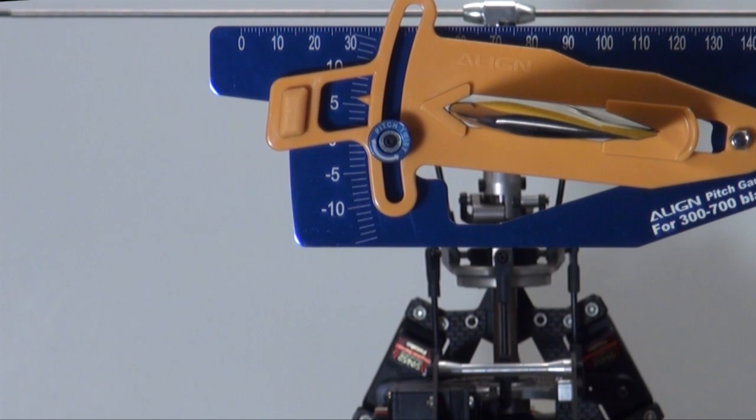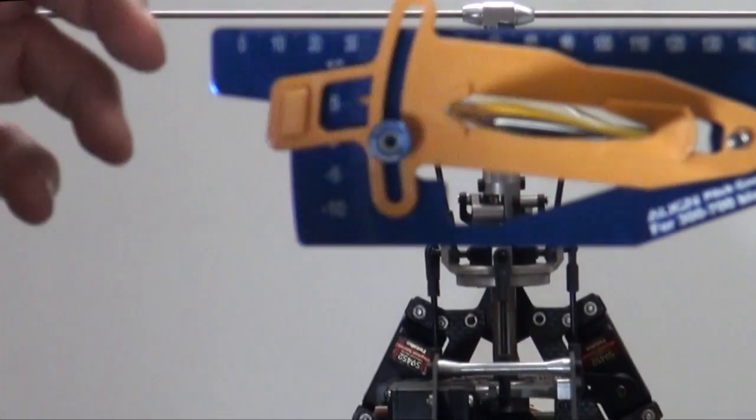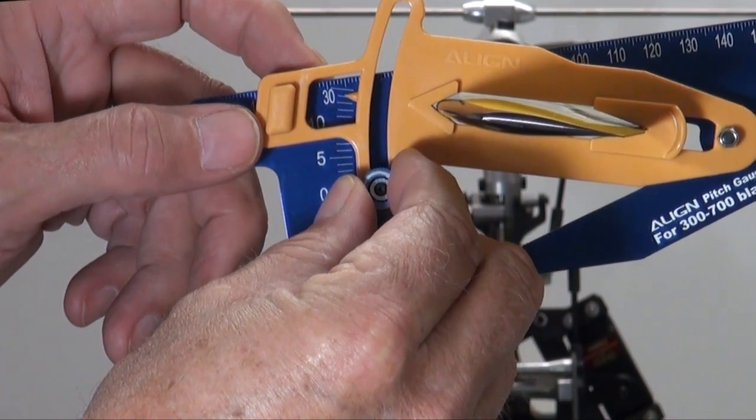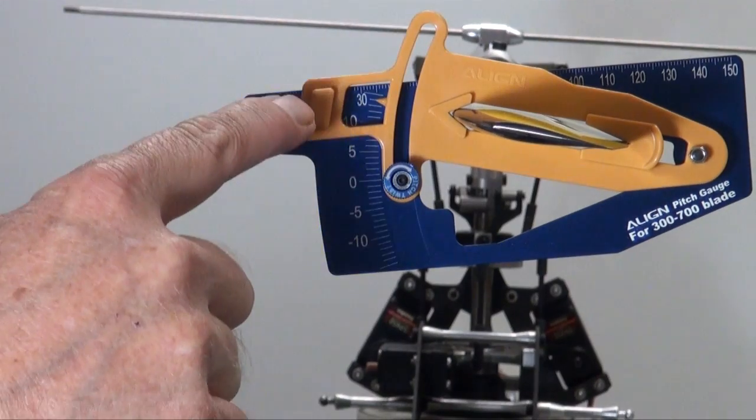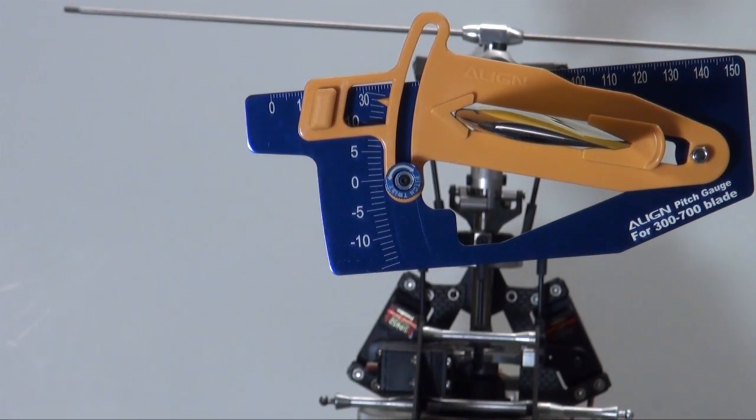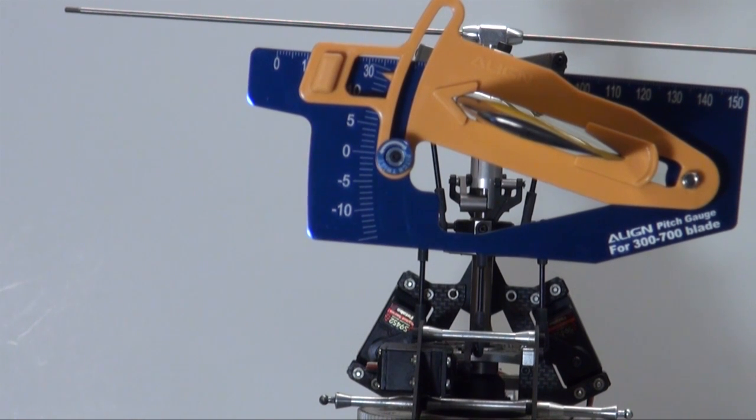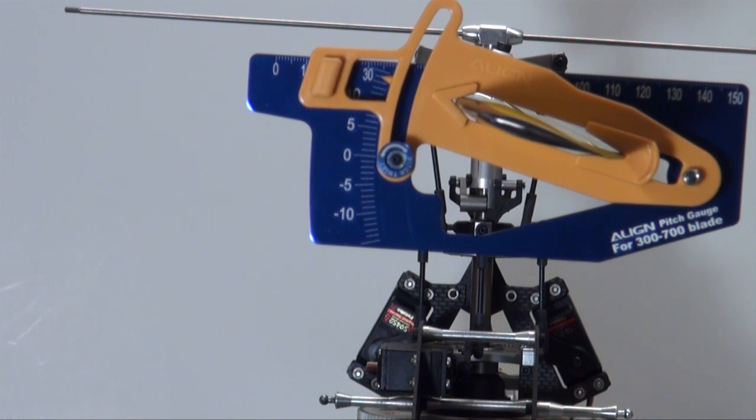Alright, now go to step K, and we're going to set the pitch range. To set the pitch range, set your pitch gauge at 14 degrees. And this is positive and that's negative, you can see the little marks. Move your collective stick all the way up. And then use the rudder stick to adjust it so the top of the pitch gauge is even with the fly bar. I think the little status light blinks or something when it's set.